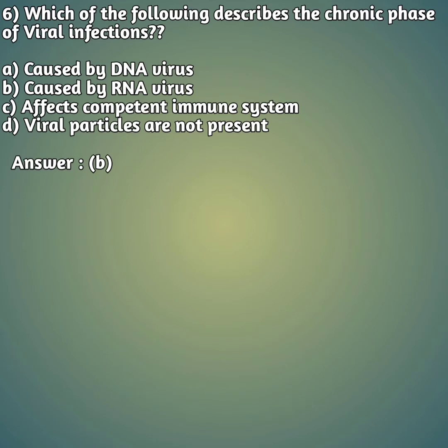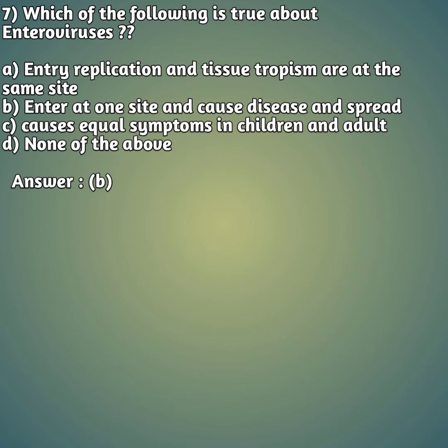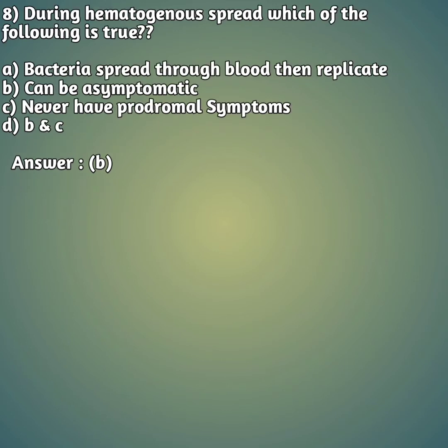Seventh question: which of the following is true about enteroviruses? Option A: entry, replication, and tissue tropism are at the same site. Option B: enter at one site and cause disease and spread. Option C: causes equal symptoms in children and adults. Option D: none of the above. The right answer is B — enteroviruses enter at one site, cause disease, and spread.